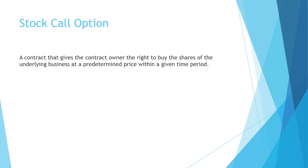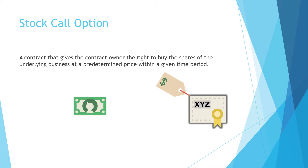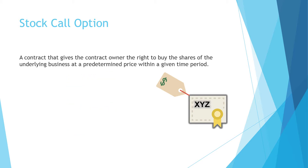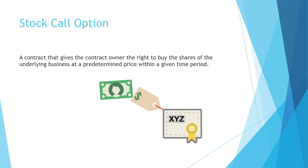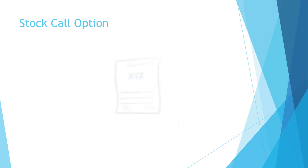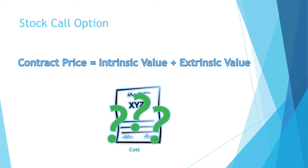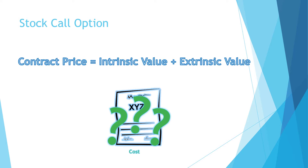Here is a quick review on call options contracts. You have stock XYZ currently trading at some price per share. You go to the options market for stock XYZ and buy a call option with a specific strike and expiration date. By exercising a call contract, you get to buy the stock at the strike specified on the contract. Each call options contract with a different strike and expiration date has a different price. The price you pay for the contract is the sum of intrinsic value and extrinsic value.